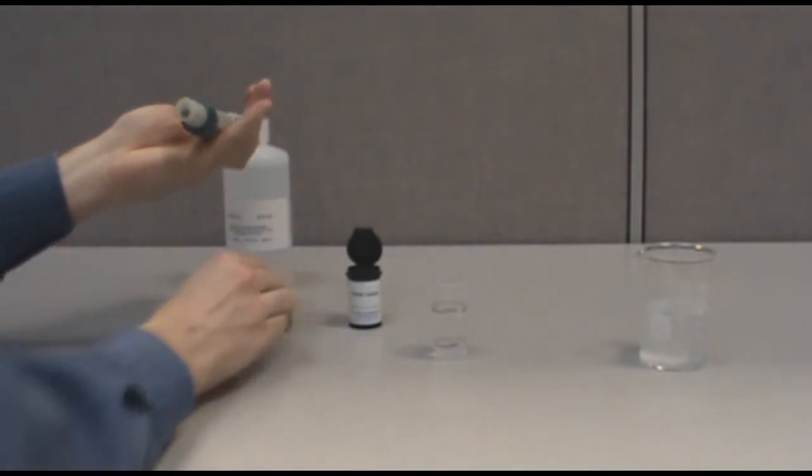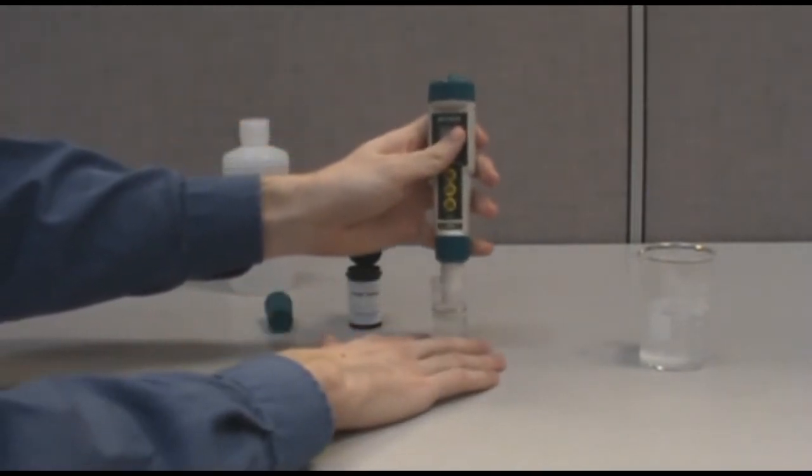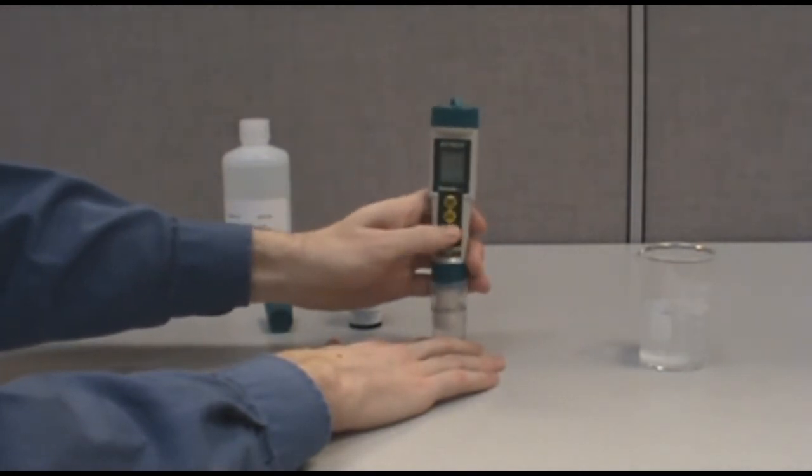Place the meter into the standard and switch on the instrument using the on-off key. The meter will then go through its internal calibration.